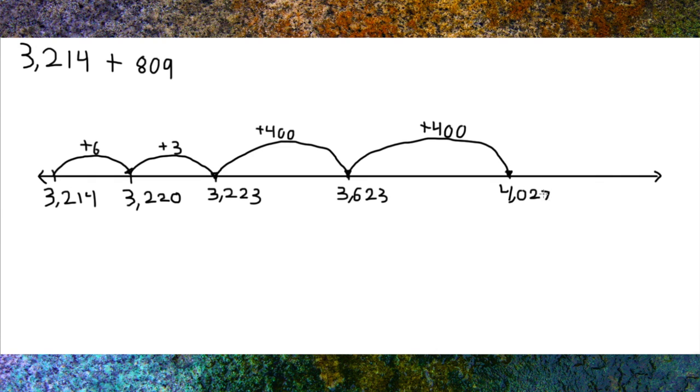By jumping 400 twice, we added the 800 in 809. We could have just made one jump of 800, but we thought jumping 400 twice was easier to add in our heads.